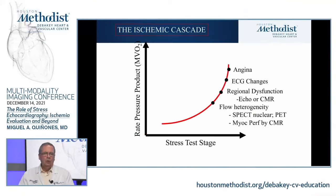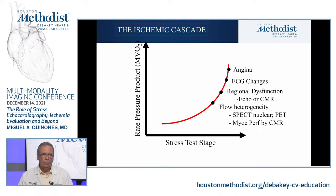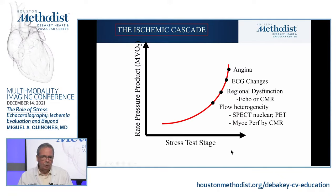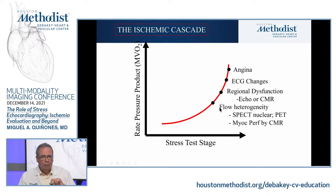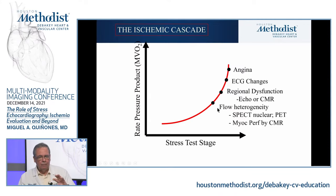Let's get into the whole concept of stress testing. Any modality we use for stress testing uses the concepts shown in what has been called the ischemic cascade. If you have a significant flow-limiting stenosis, you're going to have a problem with coronary reserve. When demands go up, the flow in that region cannot increase appropriately to meet the demands of that segment — this is called flow heterogeneity.